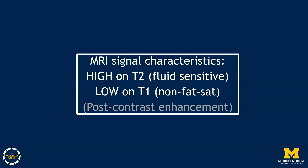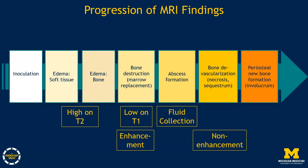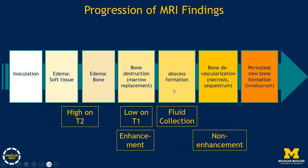Going back to the process of infection: T2 signal changes come first in the soft tissue and bone. As infection progresses into the bone, we start to see low signal on T1, which is marrow replacement — starting faint and patchy, then filling in. We usually see enhancement around the same time, and then we would go on to see abscess and necrosis.